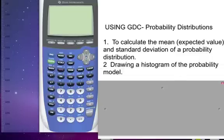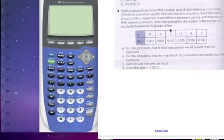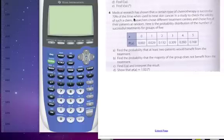So let's consider this example we have. We have certain medical research that has chemotherapy successful 70% of the time when used to treat skin cancer. In a study to check the validity of such a claim, researchers use different treatments and choose five patients at random. Here's a probability distribution of the number of successful treatments for a group of five. So here is our probability model or our probability distribution.